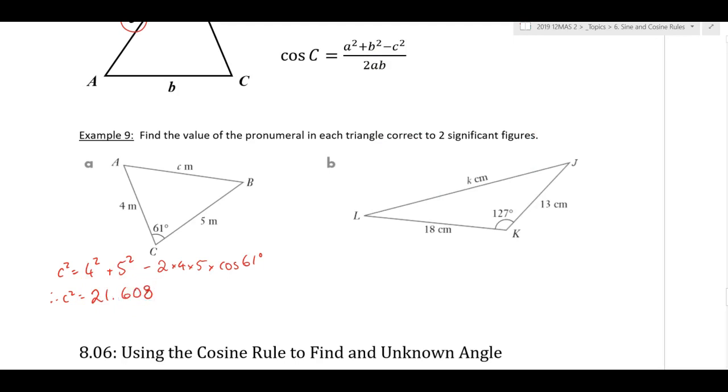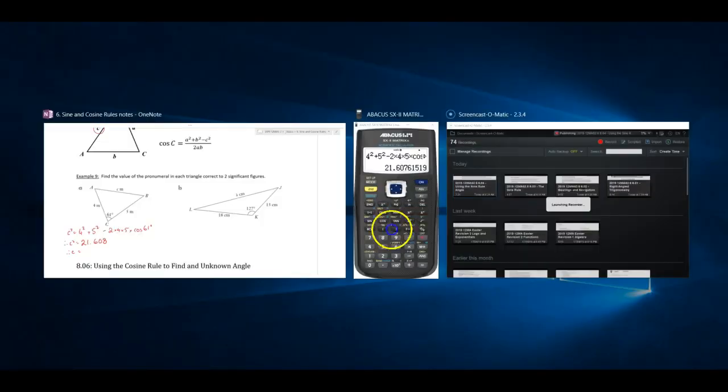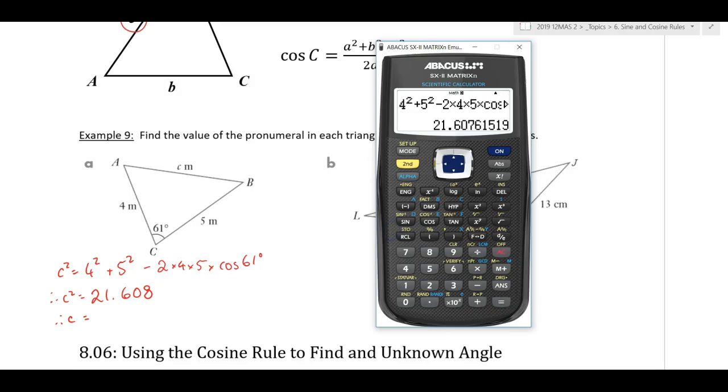Now, a really common mistake that students make is they leave that as their answer. Because the cosine rule, as typically, doesn't give you your answer. It gives you the square of the answer. Right? I've got to take the square root of that to get to c. And a little bit of common sense there. If I've got a side that's 4 and another side of 5, I can't have a third side of 21. Right? That triangle would not meet... It wouldn't form a triangle.